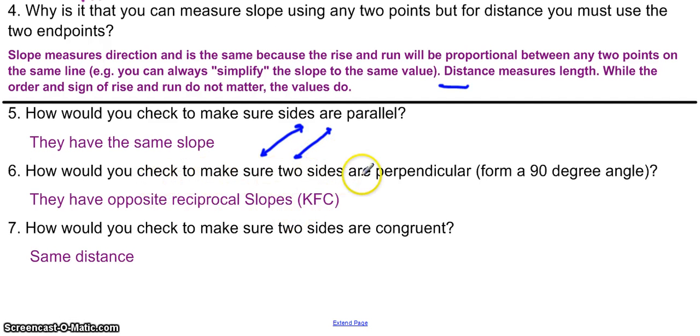How would you check to make sure two sides are perpendicular? They form a 90-degree angle. Remember, that's if they have opposite reciprocal slopes, something like this, right? Opposite reciprocal slopes, remember, are those keep flip change slopes.